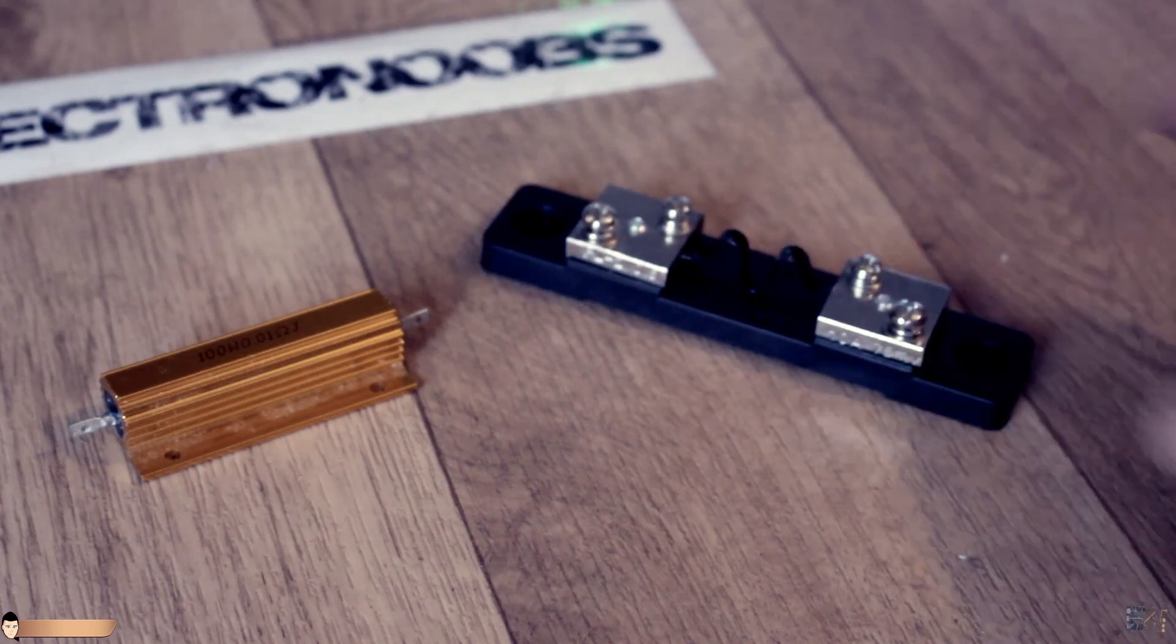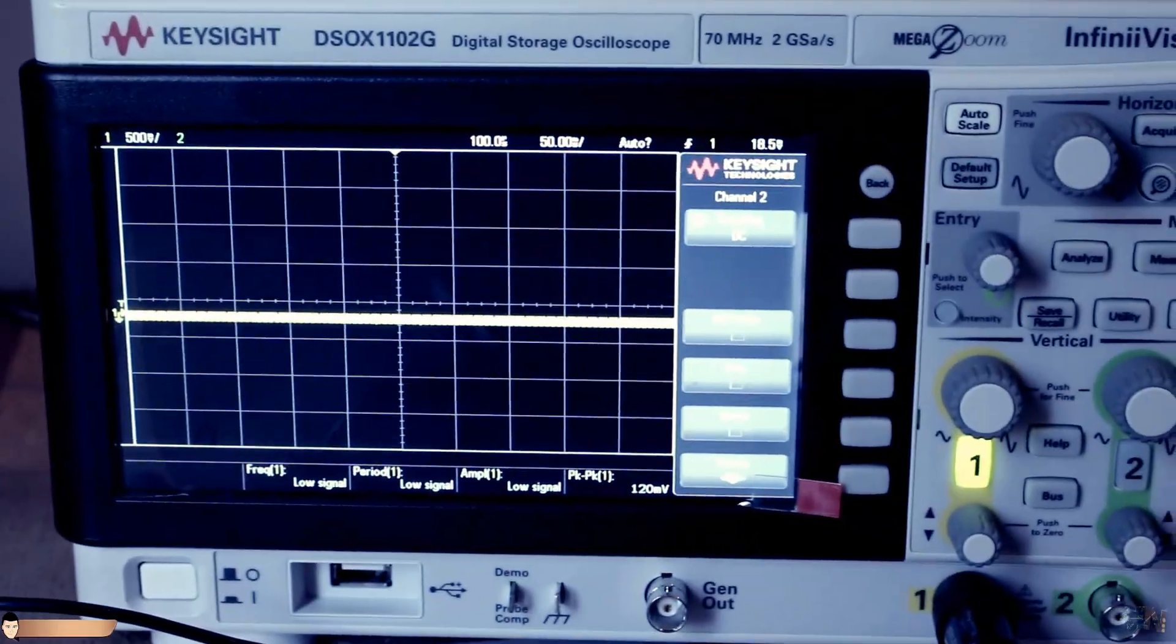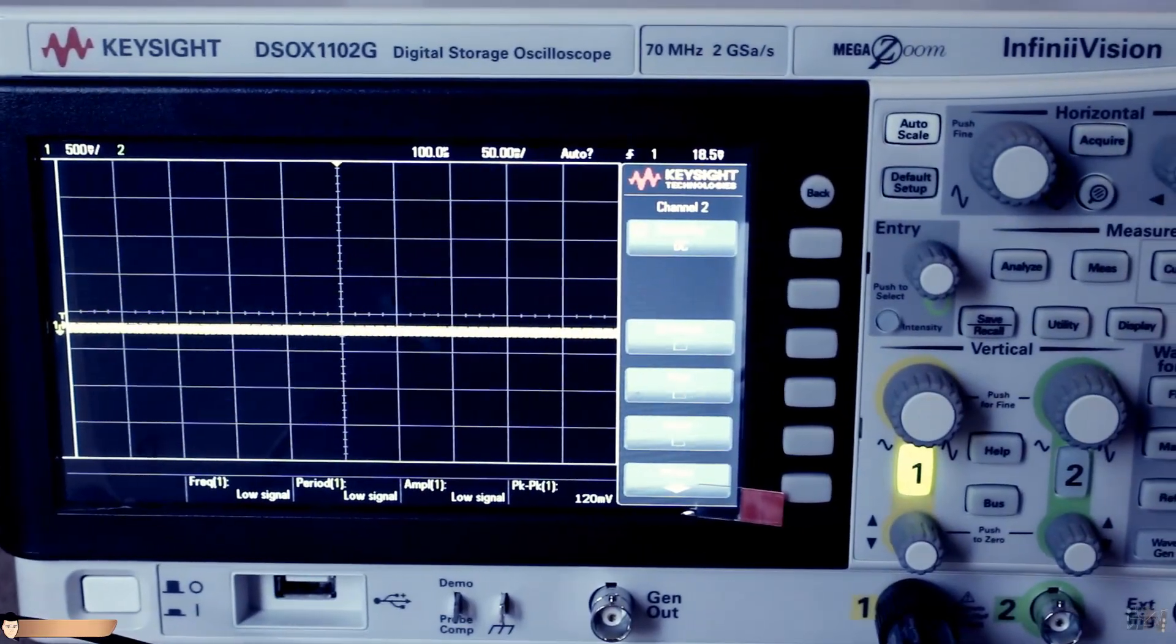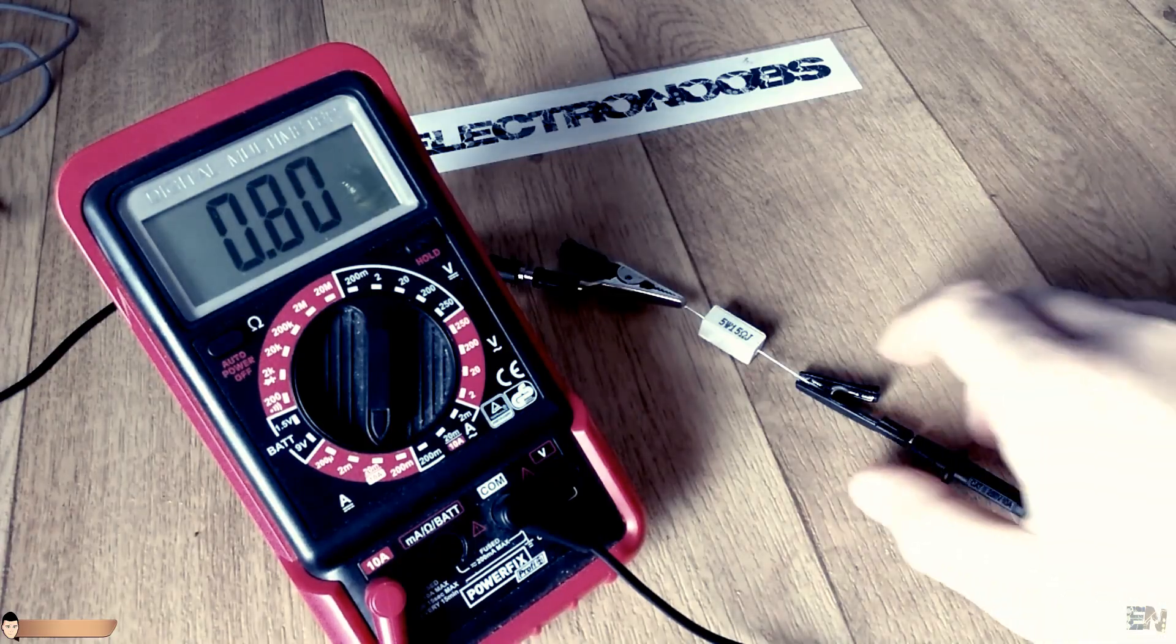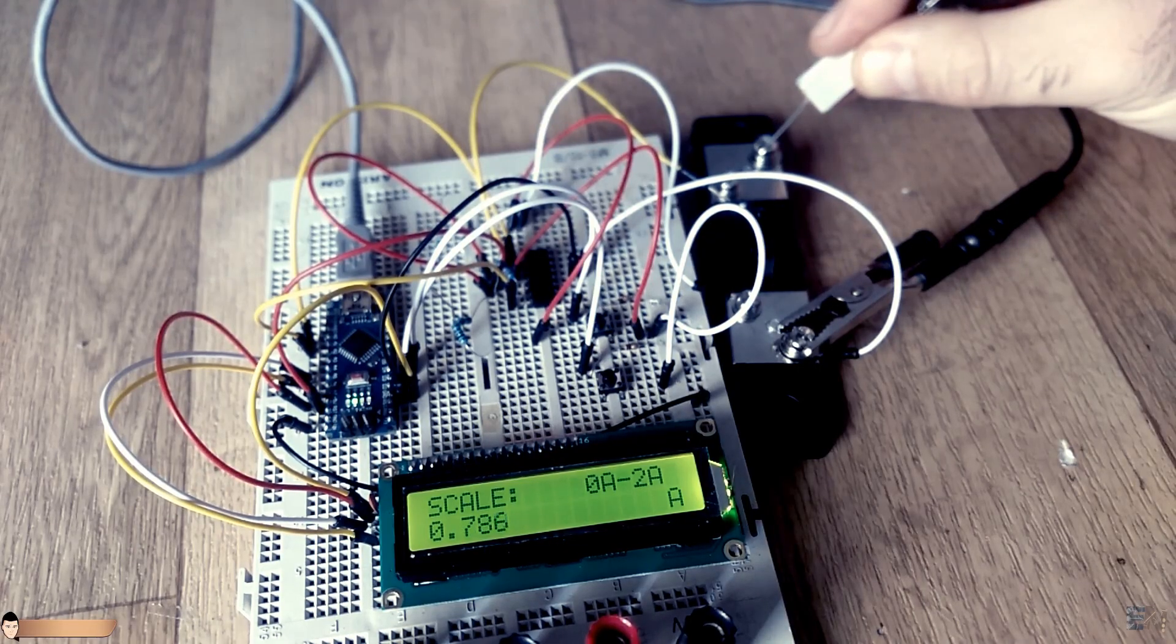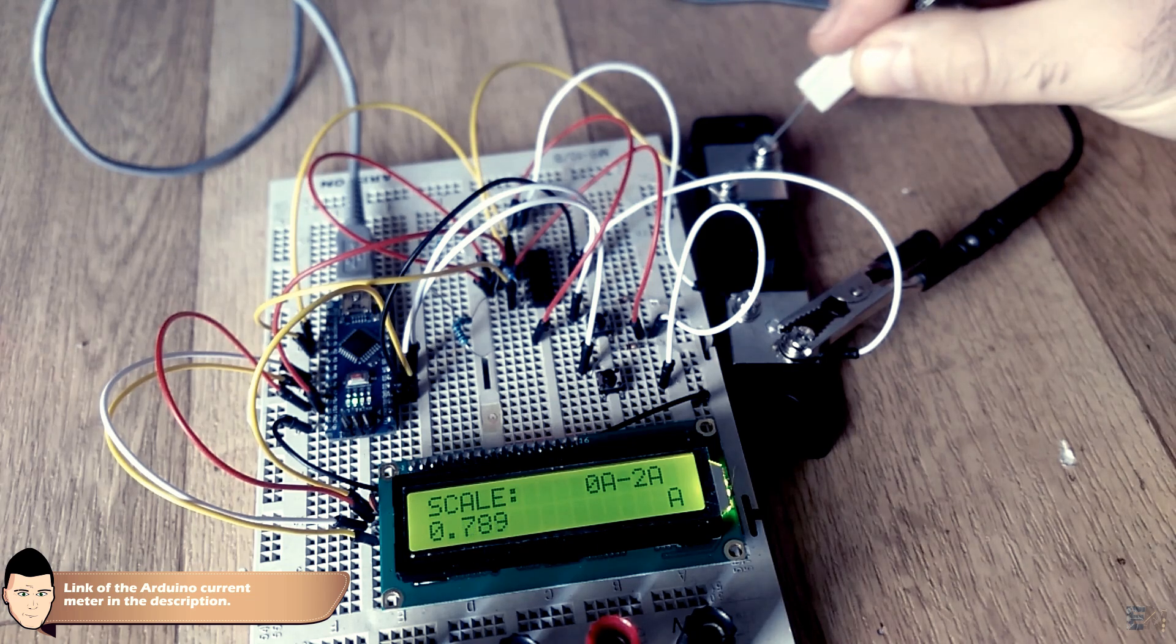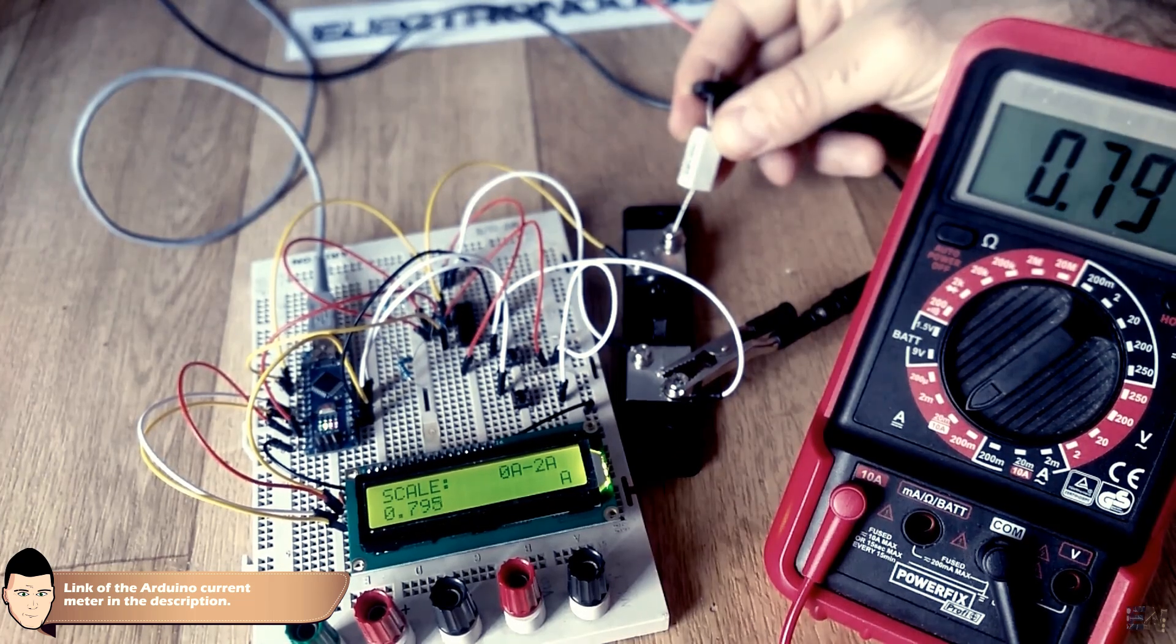Currents can be measured by measuring the voltage across a known resistance. A major disadvantage about that is that the circuit has to be open to insert the shunt resistor. We've seen this kind of current meter in one of my past tutorials of the Arduino-based multimeter. You have the link of that video in the description below.